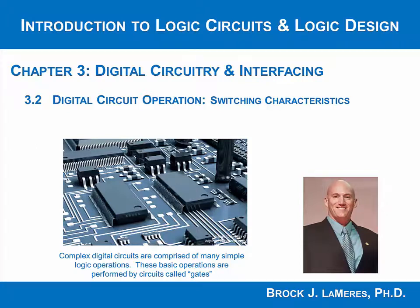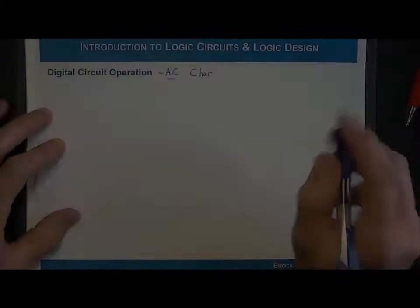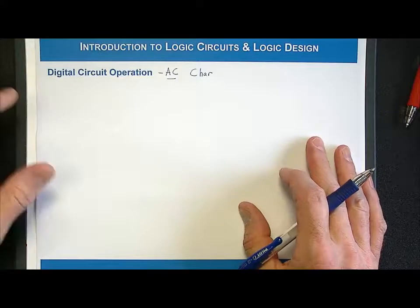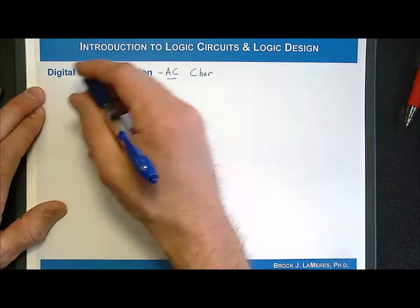Another set of specifications that we're interested in when we look at digital circuits is what is called the switching characteristics. These are also called the AC characteristics. AC stands for alternating current, but we sometimes use it to represent the transient behavior of a system.